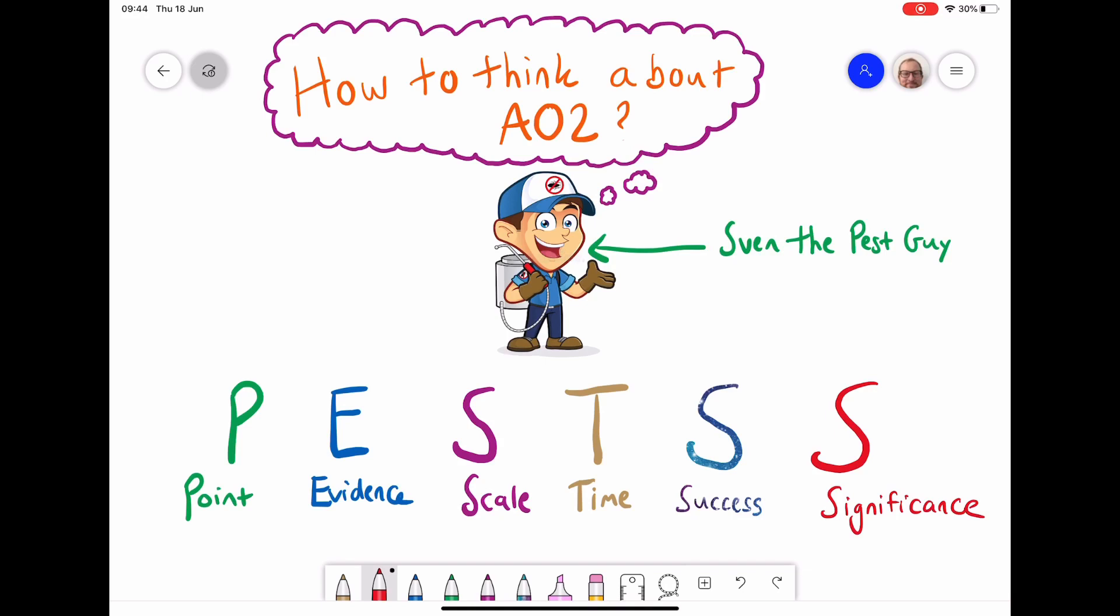behind a certain argument or a geographical idea will help you with that. The last word, significance, it's not a word that you necessarily use for all of the answers, but it's something to think about in terms of if you're thinking about significance of different factors. Is one factor more important than the others? If you're talking about a certain strategy, is one strategy more important, more significant than other strategies?